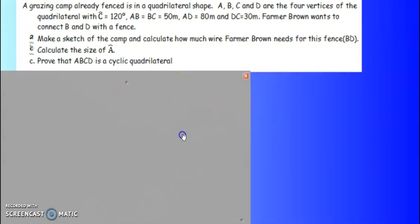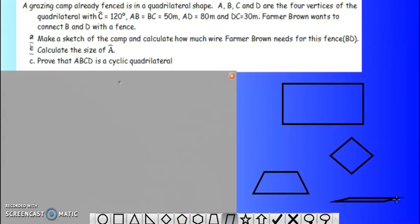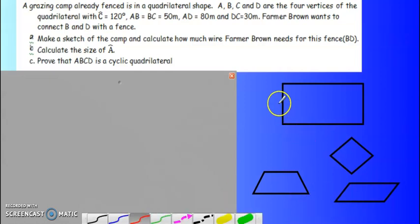So how do you draw a sketch of a quadrilateral? They tell me it is a quadrilateral. It can be any shape that has four sides. It does not have to be specific so long as it has four sides. It is immaterial. So they asked me that one side is equal to another side which has a common point B.